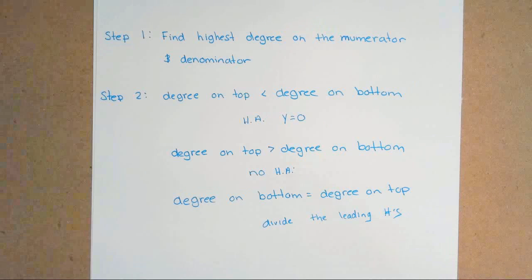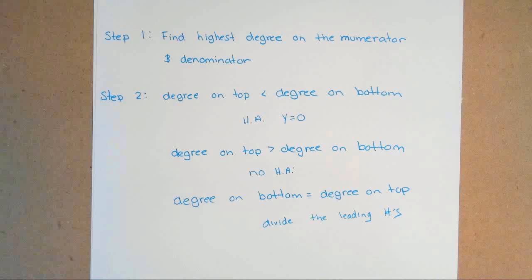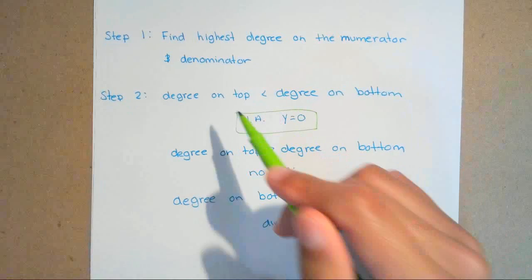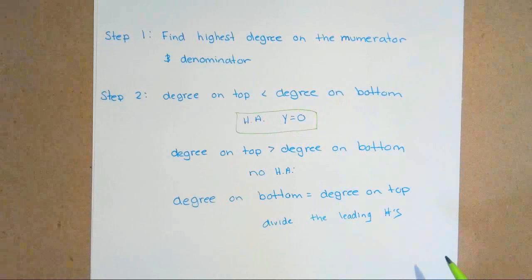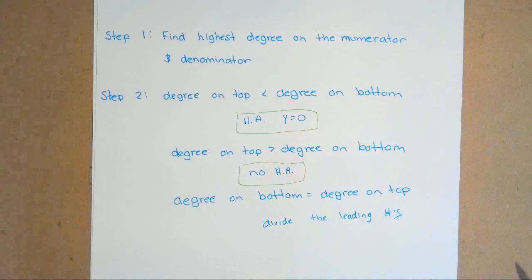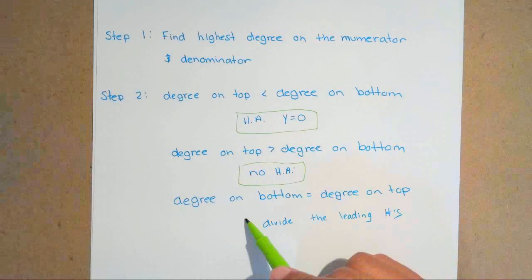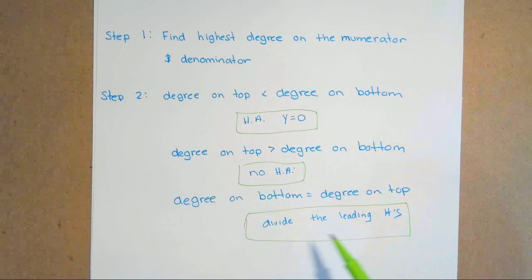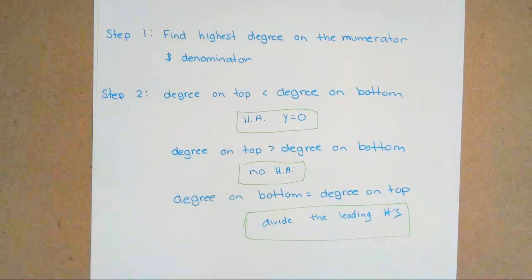Step one: always find the highest degree in the numerator and denominator. Step two: when the degree on the top is less than the degree on the bottom, your horizontal asymptote is y equals zero. When the degree on the top is greater than the degree on the bottom, there's no HA. And when the degree on the bottom equals the degree on top, you divide the leading coefficients.